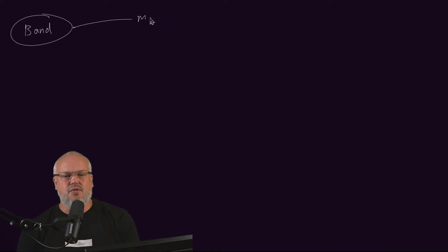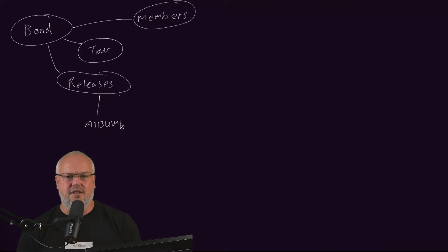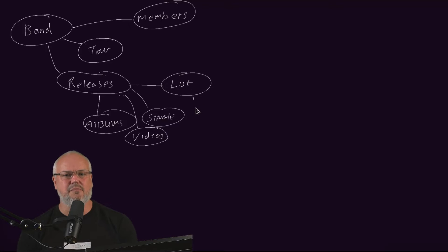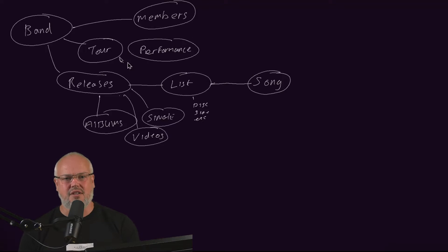First of all, we have a band and a band can have members. We didn't show that in the demo, but it's something to consider for the future — especially if you want to do the history of the band or blog about band members. Bands go on tour and bands release their music in the form of albums, singles, and other packages including videos. All these releases have a curated list of songs, often playlists on physical media like discs — sometimes side one and side two. And a tour is a series of scheduled performances, usually for a particular year.